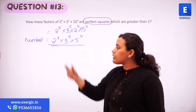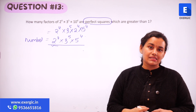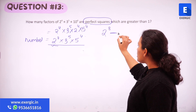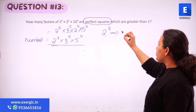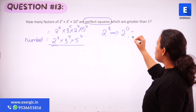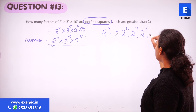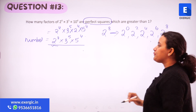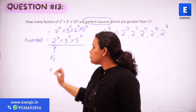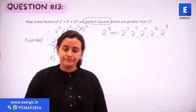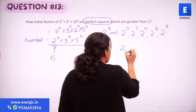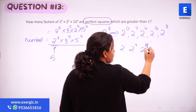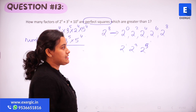So for 2 raised to the power 8, how many perfect square values of the power are there? The power of 2 can take: 2⁰, 2², 2⁴, 2⁶, 2⁸ — so 5 values in total. We cannot take 2¹, 2³, or 2⁵, as all odd-power values are not acceptable.